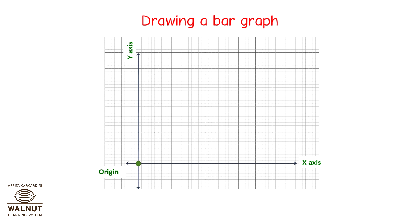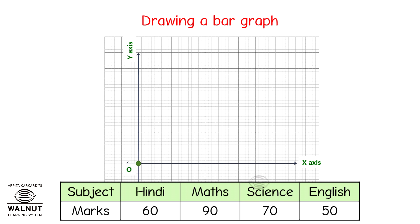So, we are all set to draw the graph, but we need some data to construct the graph from. Let us use this table. This table tells us the marks that Sunita obtained in the final exam in four subjects. We are going to draw a bar graph based on this information. Now, we have to decide what to mark on which axis. We take the quantity that we have to compare on the y-axis and the fixed things on the x-axis usually. So let us mark the x-axis as the subject axis and the y-axis as the marks axis.